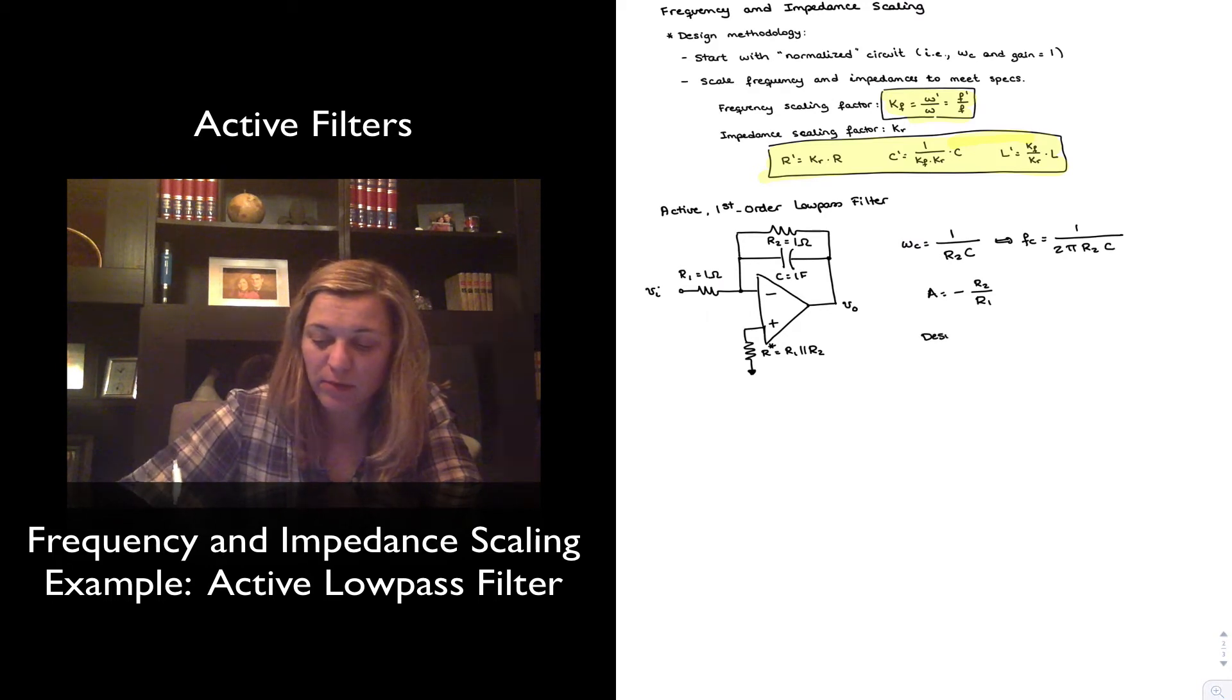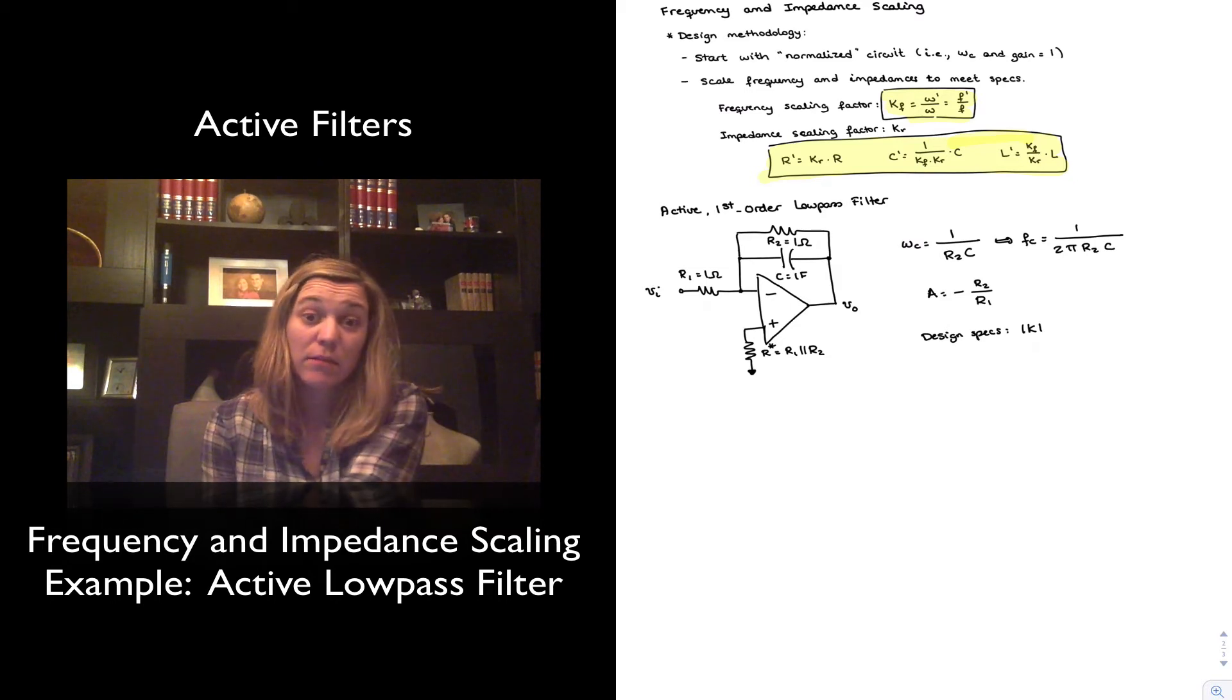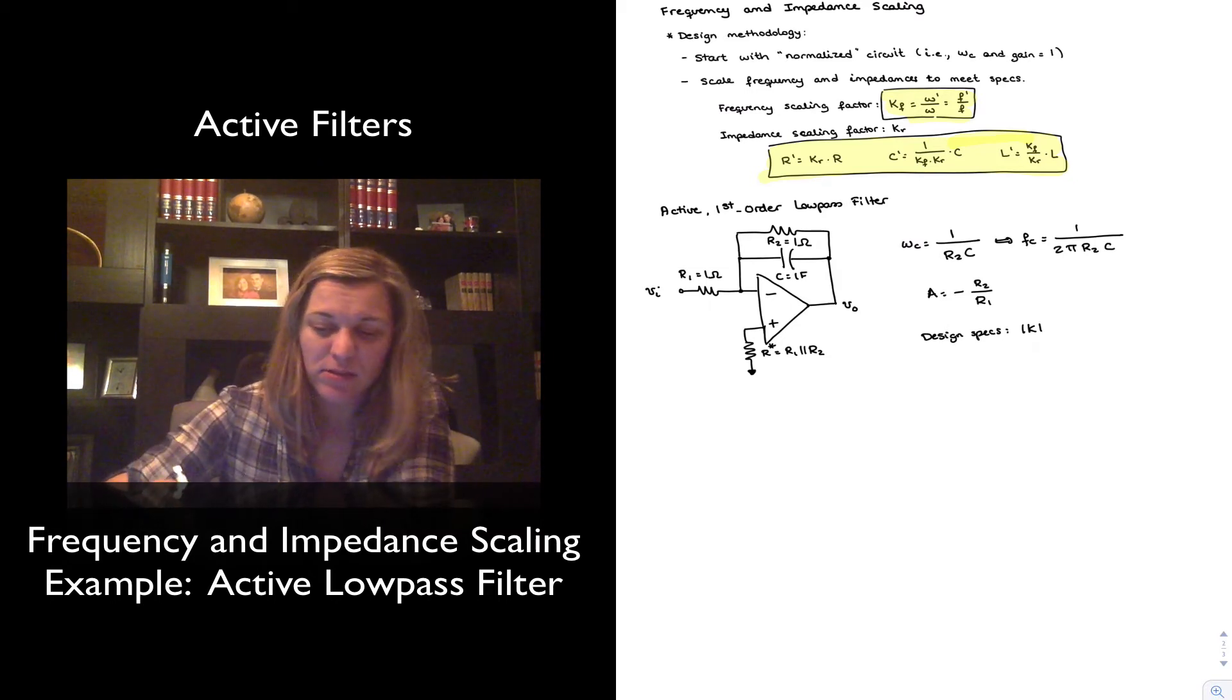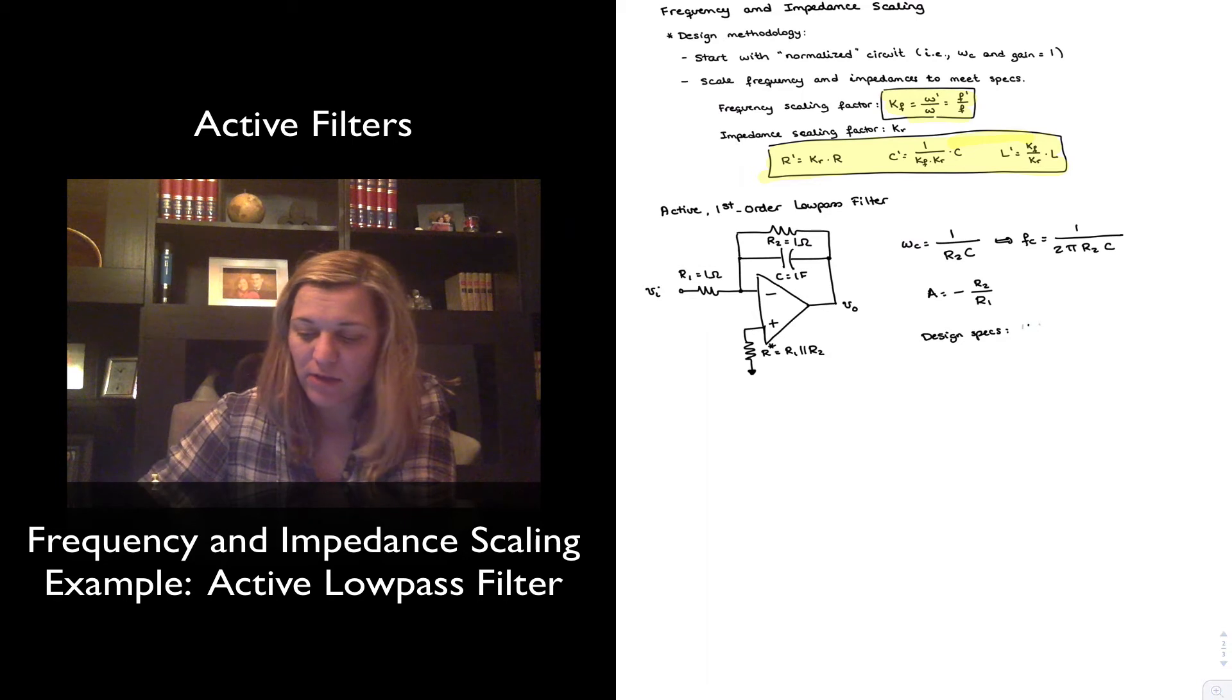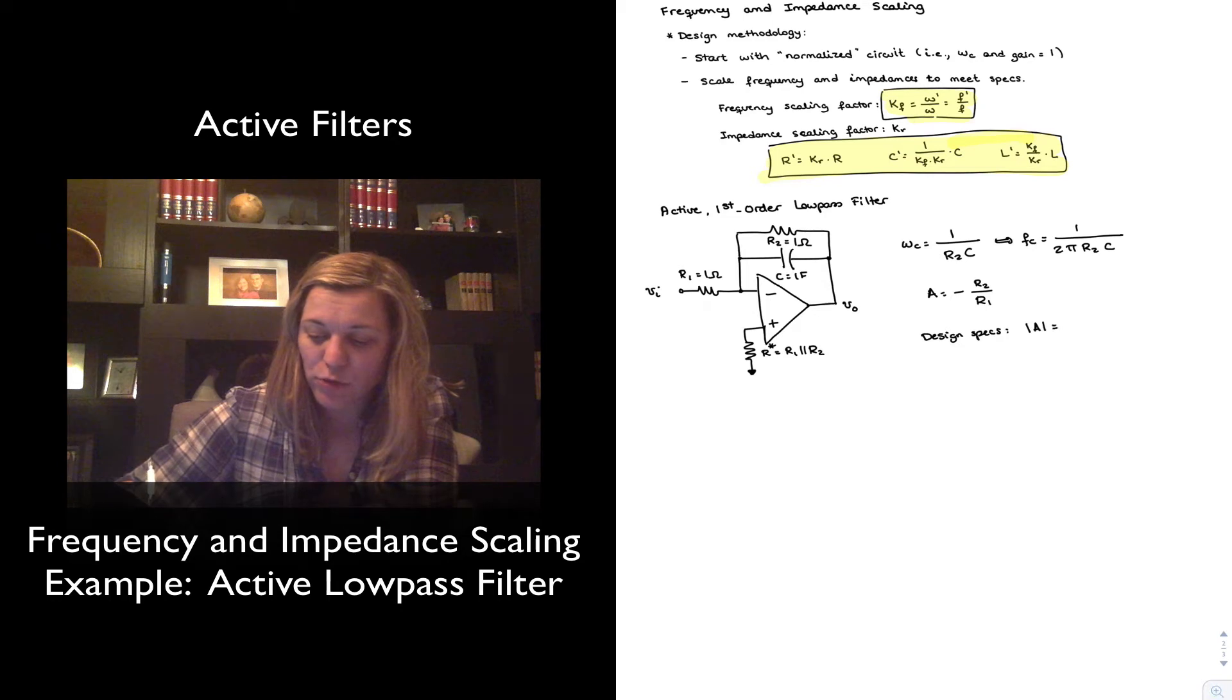Let's imagine that our design specifications are such that we want a magnitude of gain equal to 5, and sometimes the gain is referred to as K because that's the scaling factor, but since I've written it as A before, I'm just going to keep that notation. So let's imagine I want my A equals to 5 in magnitude,